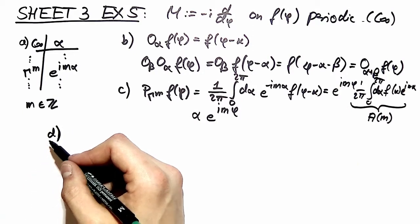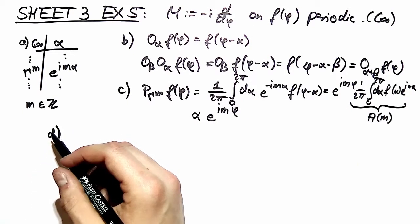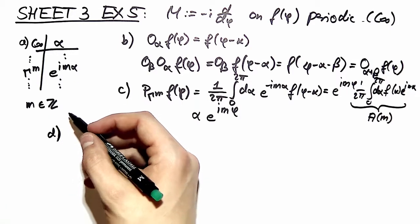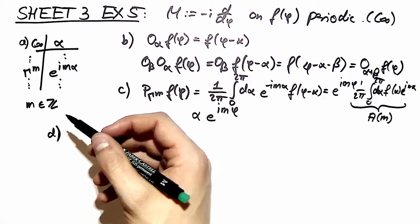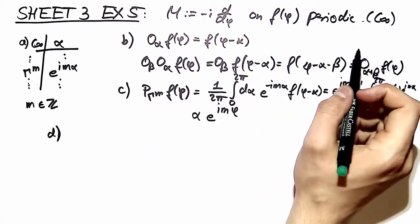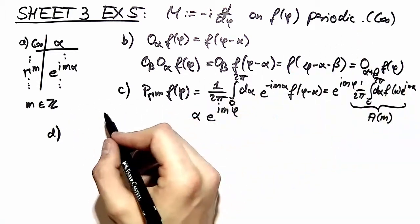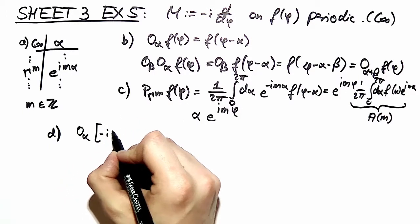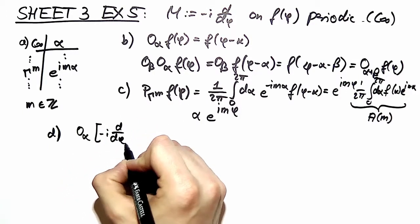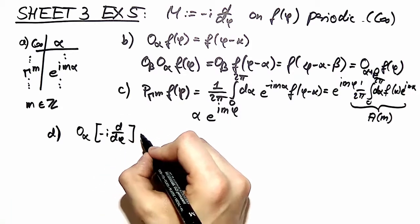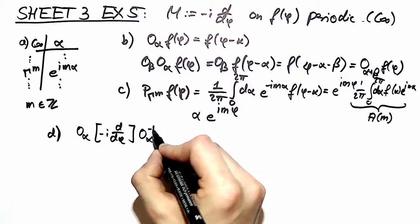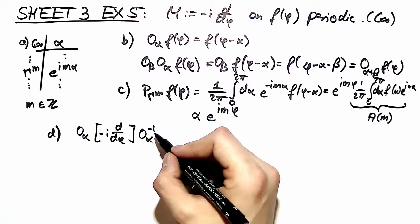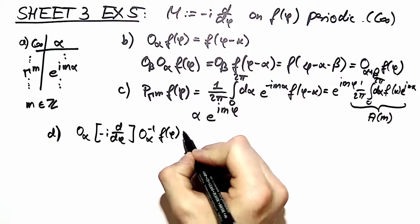Here in part d we want to solve our eigenvalue problem. But before we write down our eigenvalue equation we check that m commutes indeed with c infinity right here. To do that we perform a similarity transform of our vector m according to the symmetry group right here. And the symmetry group is defined by o alpha. So we do that and see what happens if we apply that on a function f of phi.